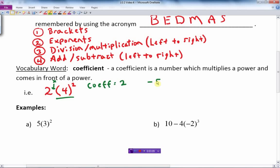Let's do another example. If I have negative 5 times negative 3 to the fourth power, in this case here the coefficient is negative 5, not 5 but negative 5.